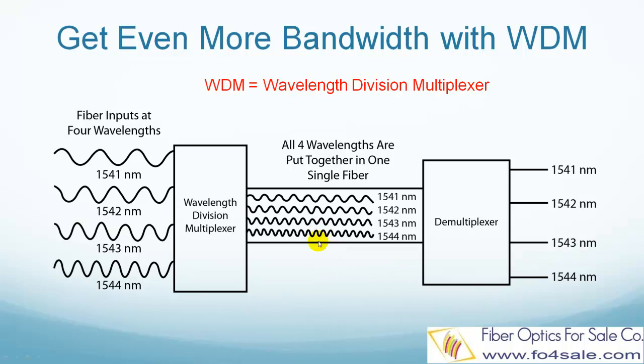If each wavelength carries 40 gigabit per second signal, then a 10-channel WDM system can carry 400 gigabit per second. Not to mention a 100-channel WDM system.